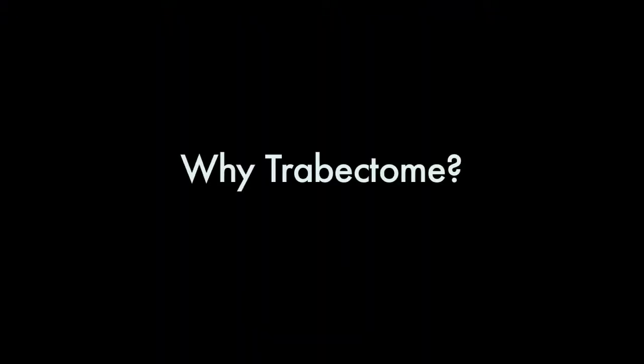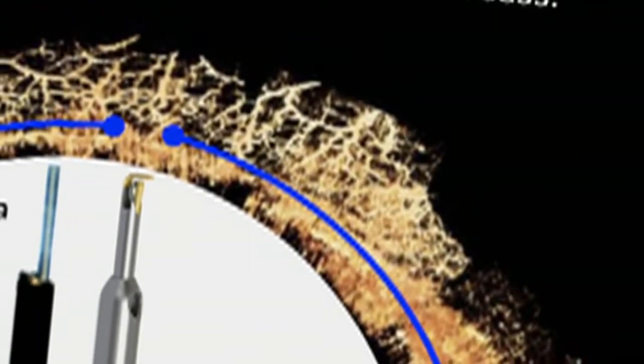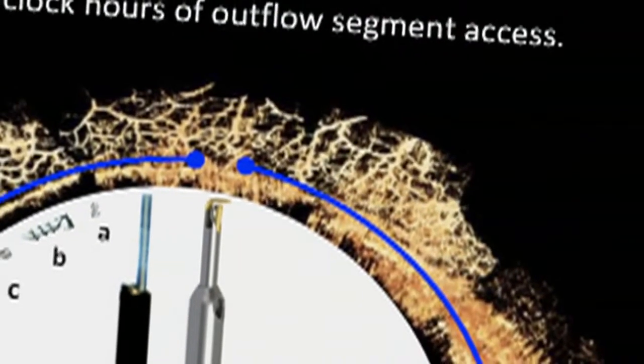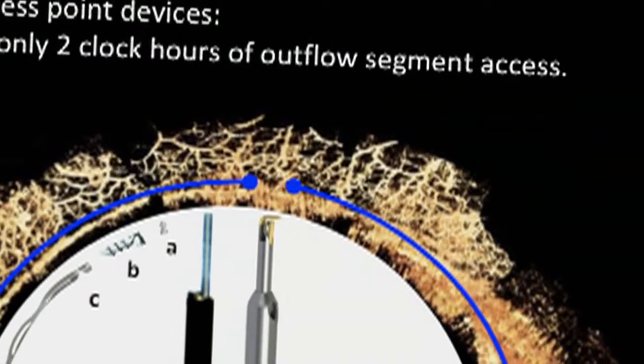So why trabectome? The difference, quite easily, is 180 degrees versus only two clock hours. This is a graphic that shows, as a background image, the outflow system — that's what we're dealing with in minimally invasive glaucoma surgery. This is Schlemm's canal here, and these are the collector channels.